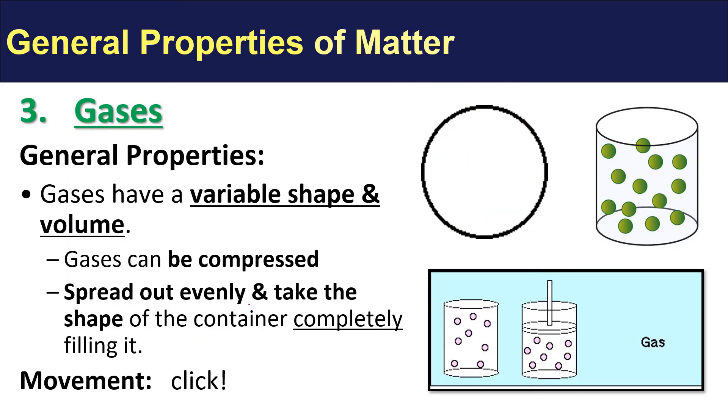All right, on to gases. Gases will have the general properties of having variable shape and variable volume, meaning that the shape and the volume can indeed change. Gases can be compressed. We can see that there's a ton of space between the particles, and that allows them to get squeezed together, as you can see here with this little piston that's coming down. One of the other properties we're going to see of gases is that they will always spread out evenly and take the shape of any container, and they will completely fill it.